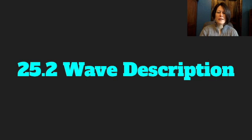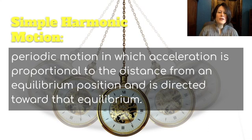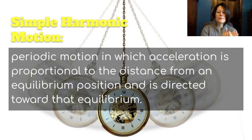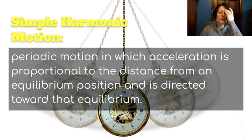Now let's describe a wave. The first thing we have to talk about is simple harmonic motion — this is periodic motion in which acceleration is proportional to the distance from an equilibrium position and is directed toward that equilibrium. Periodic motion means it takes a certain period of time. Think of a periodical, like a newspaper or magazine that comes out at a set time — predictably. So this is a motion that happens predictably in time, like the swinging of a pendulum going back and forth.